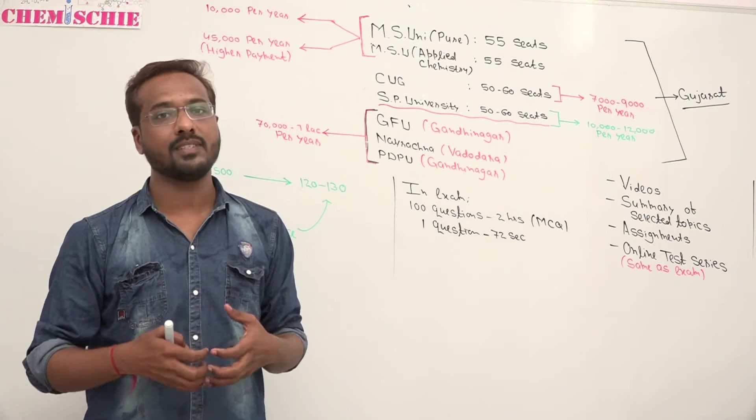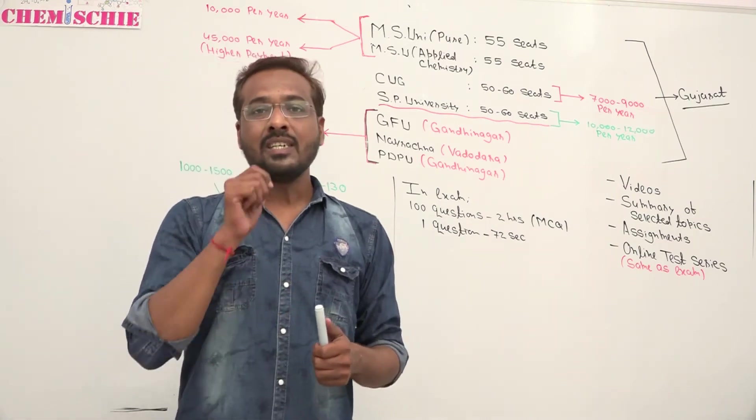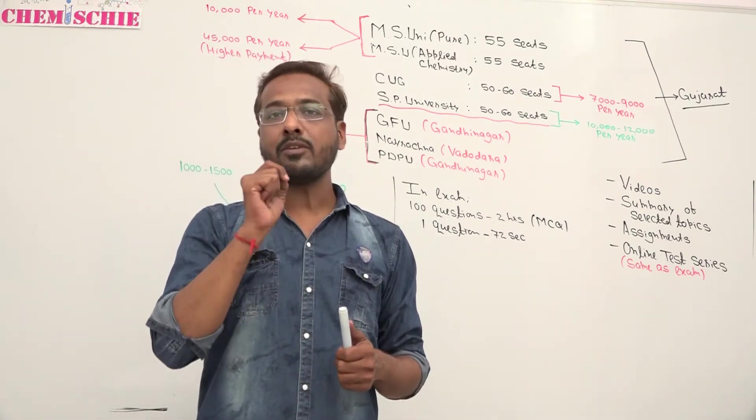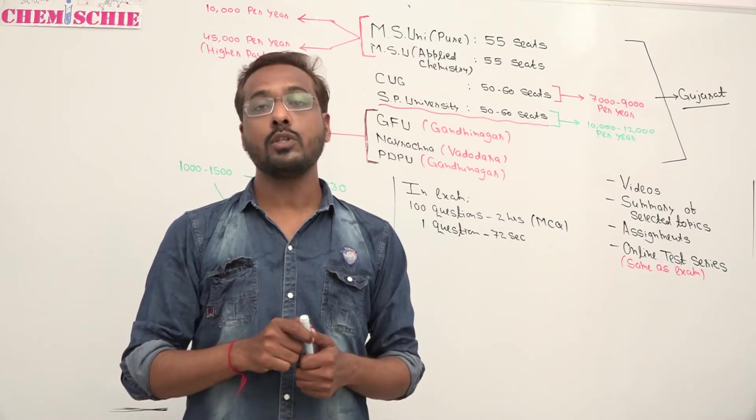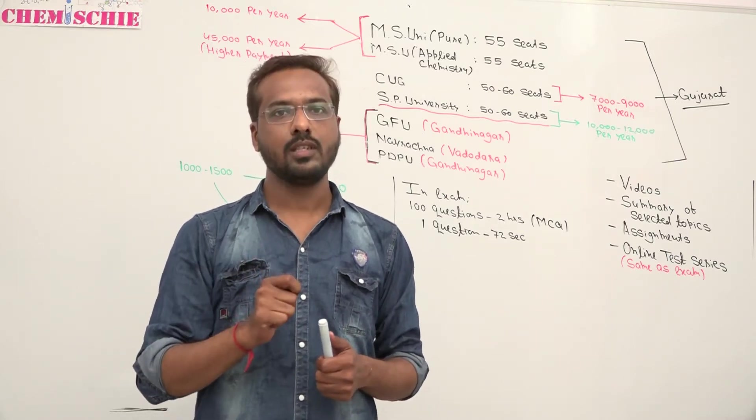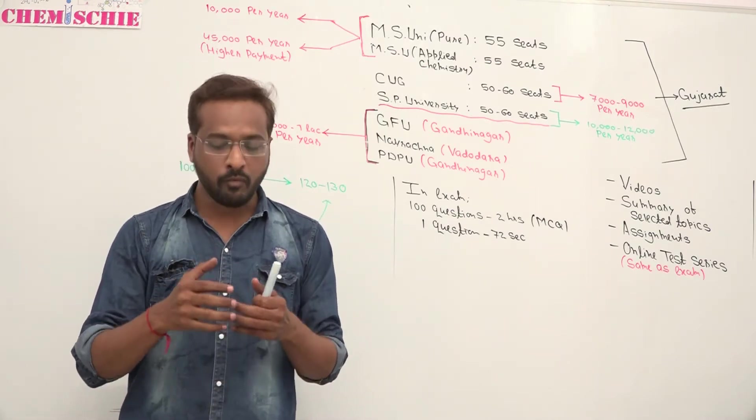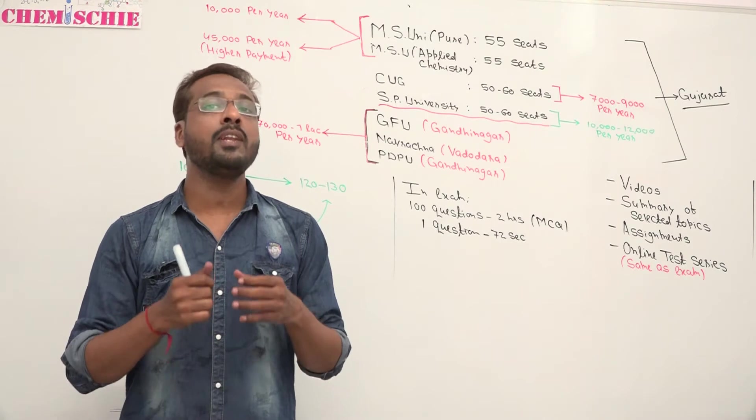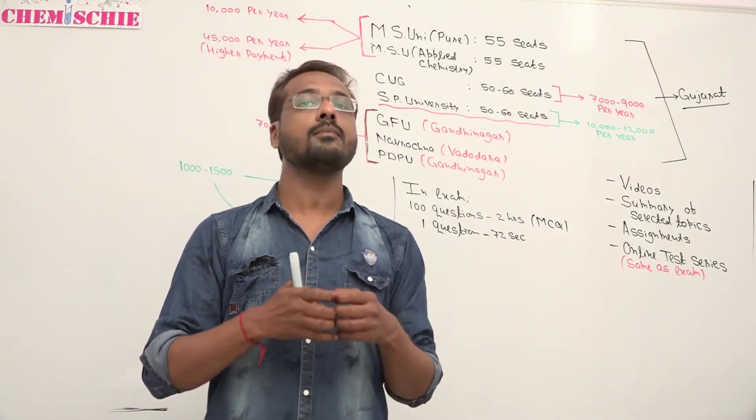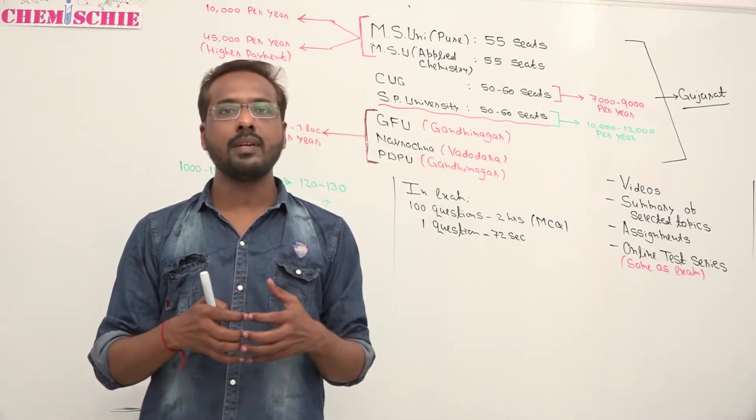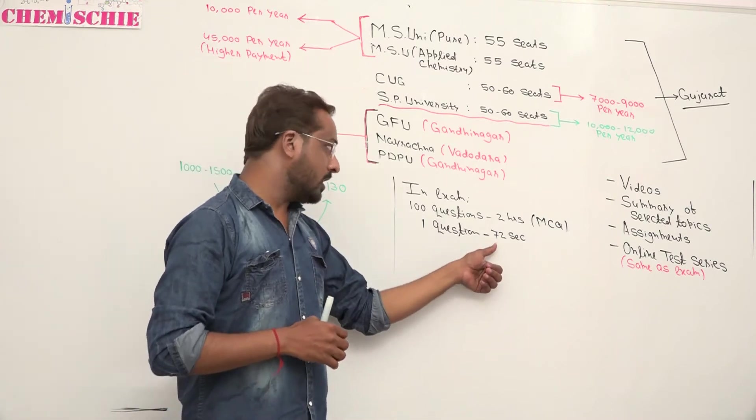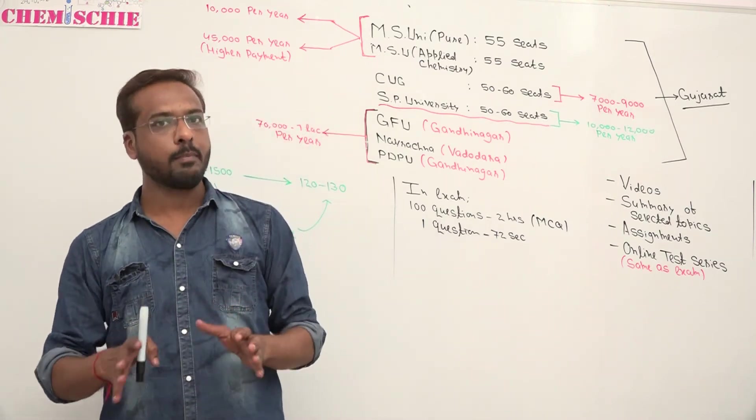When we get to answer, one question takes 72 seconds. So it's very tough to answer. Because 72 seconds per question is a tough thing. What we need are concepts and summaries. Without concepts and summaries, you can't attend questions in 72 seconds.